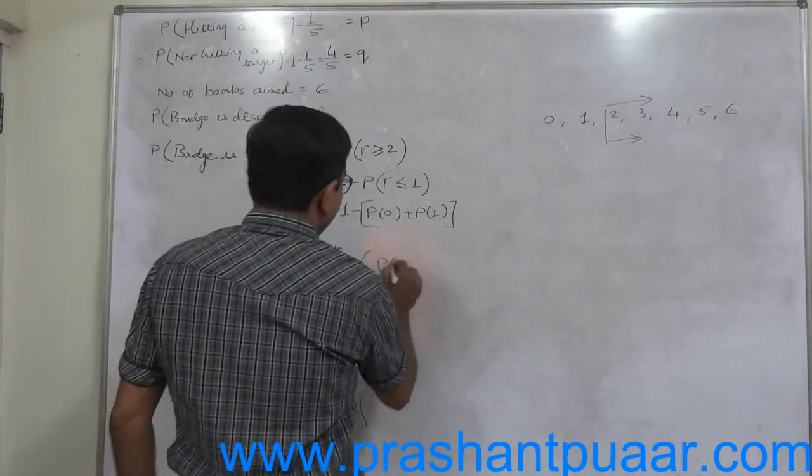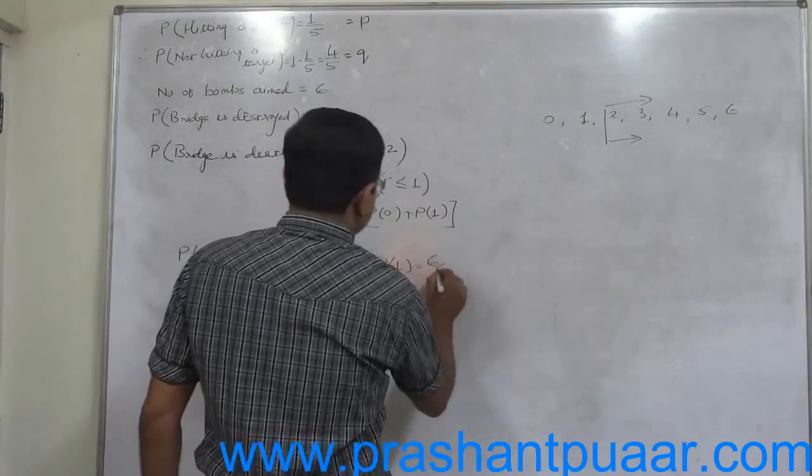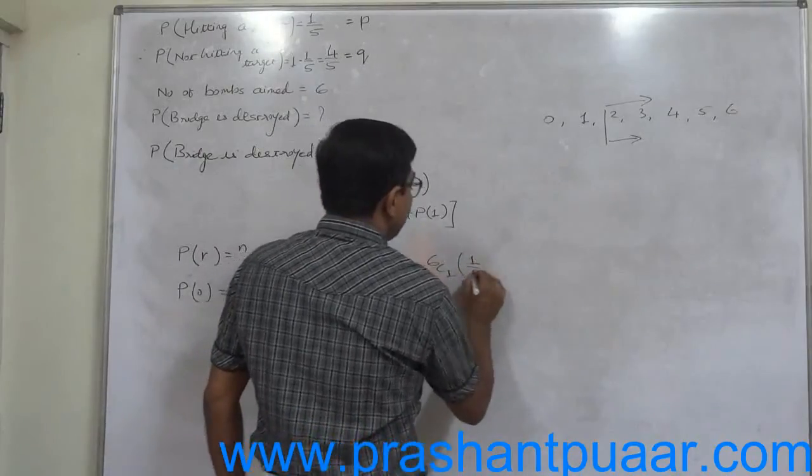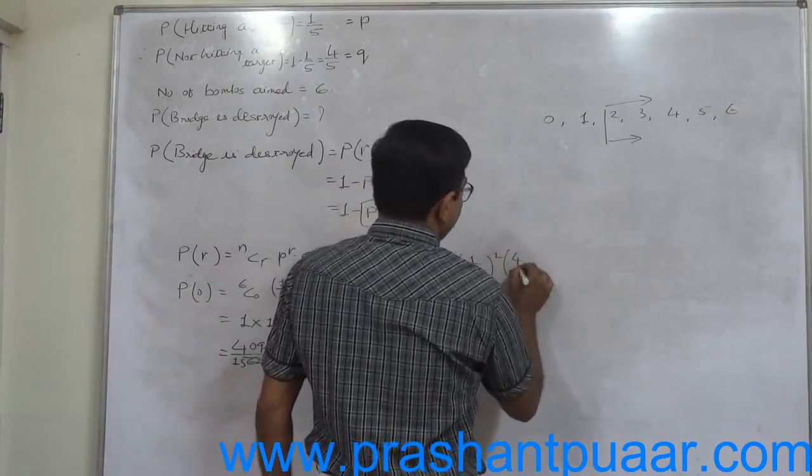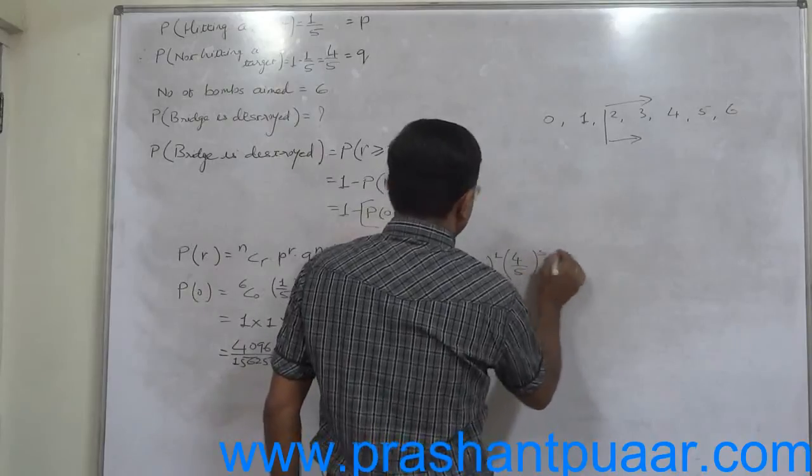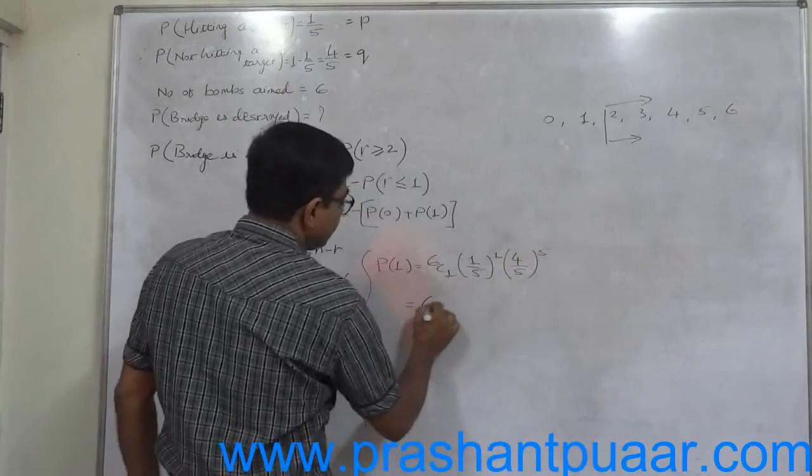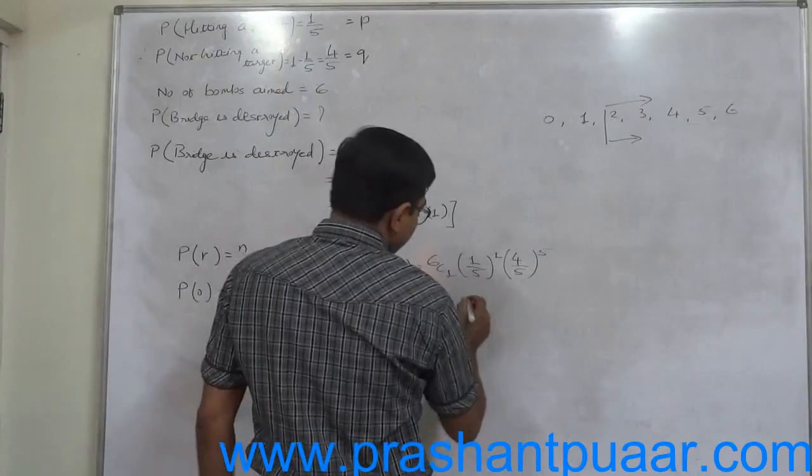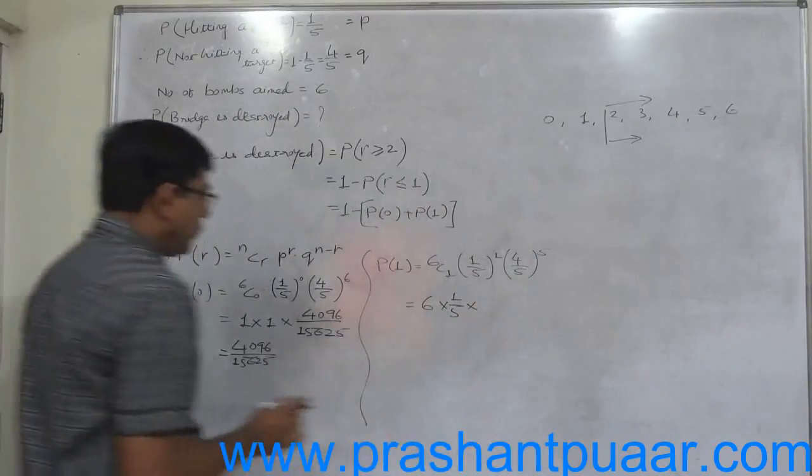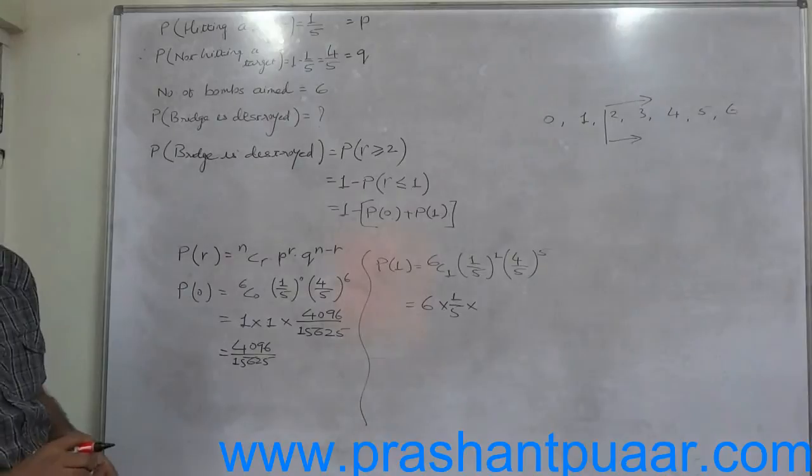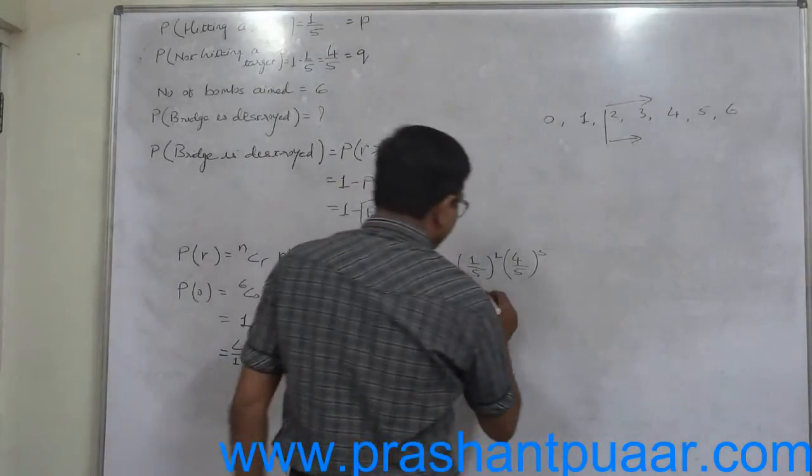Now probability of 1 success is 6C1 into 1 by 5 raise to 1 into 4 by 5 raise to 6 minus 1, that is 5. 6C1 is 6 into 1 by 5 raise to 1 is 1 by 5 into 4 raise to 5. It is equivalent to 2 raise to 10, which is 1024.